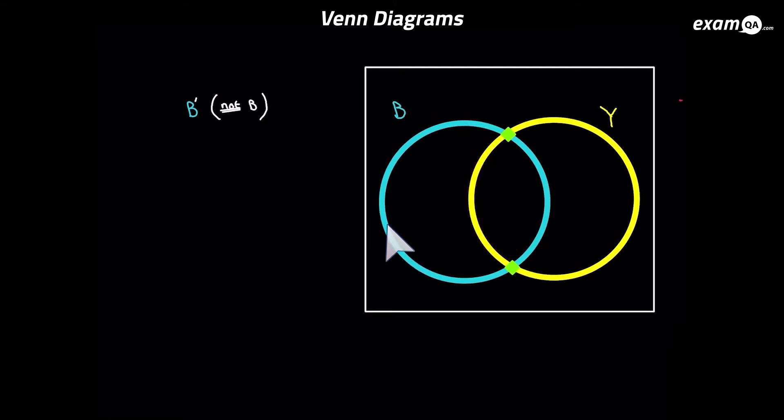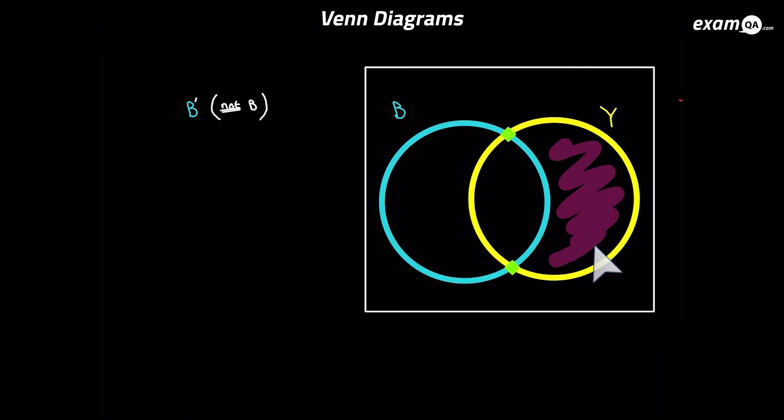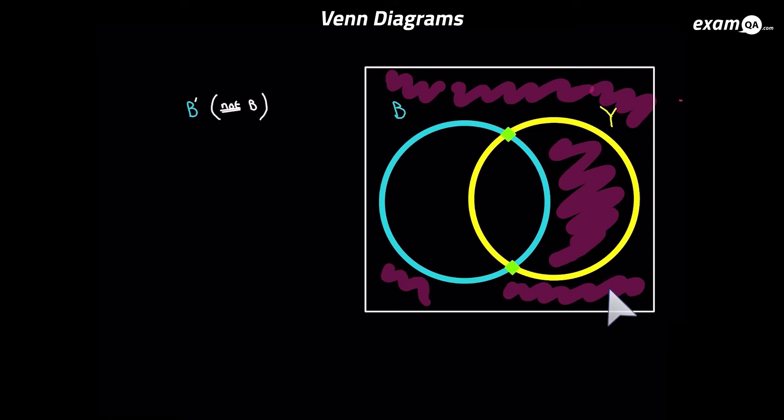Now we've got B with an apostrophe, and what that means is 'not B'. Which region is that? It's this bit — and of course it's the outside as well, because that's also not B. So it's everything outside the B circle.